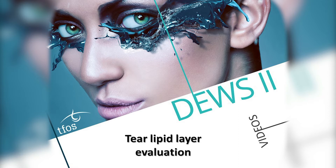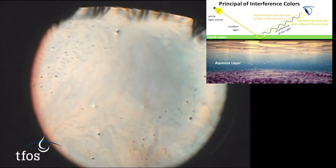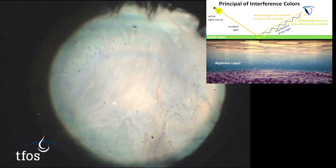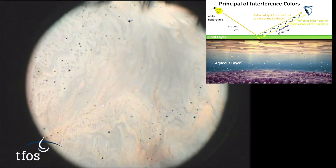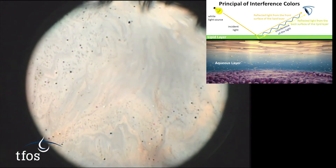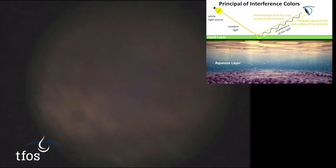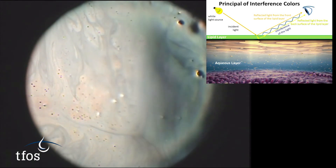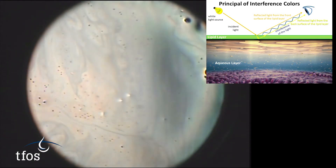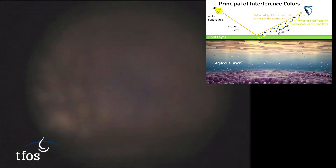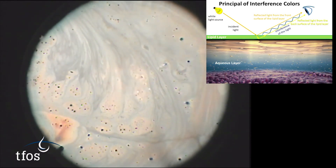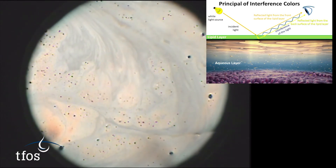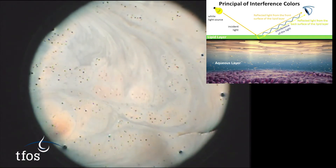The tear lipid layer forms a thin film over the mucoaqueous component of the tears. When light is specularly reflected from the lipid layer surface, interference fringe patterns are visible by virtue of the difference in refractive index between the lipid layer and the underlying layer. The lipid layer pattern can change during the interblink period and vary from blink to blink, so it is best viewed dynamically over consecutive blinks.